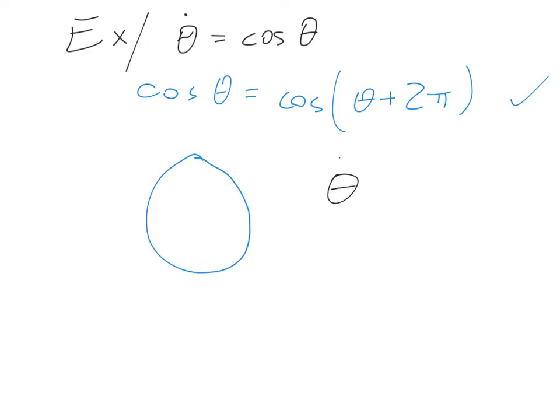Theta dot equals 0 implies cosine theta equals 0, and this happens at pi over 2 and 3 pi over 2, which we're calling negative pi over 2 for the range that we selected.